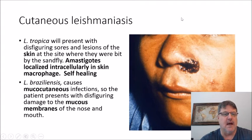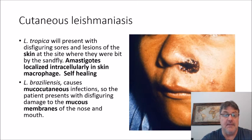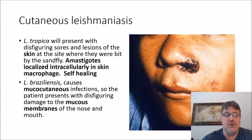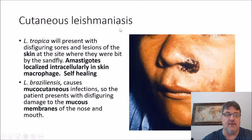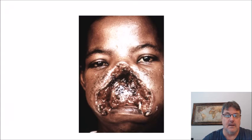Here's cutaneous leishmaniasis. Leishmania tropica presents with disfiguring sores and lesions of the skin at the site where the patient was bitten by the sandfly. Amastigotes — remember those from Trypanosoma cruzi? This parasite also produces them, and they're microscopically indistinguishable too. The amastigotes localize intracellularly in the skin macrophages; it's self-healing. Leishmania braziliensis causes mucocutaneous infections, where the patient presents with disfiguring damage to the mucous membranes of the nose and mouth. That's what a cutaneous leishmaniasis wound looks like, and that's a severe case of mucocutaneous leishmaniasis.